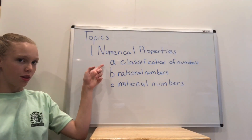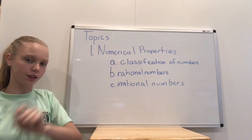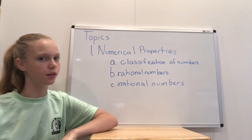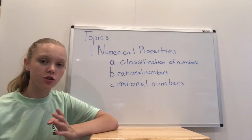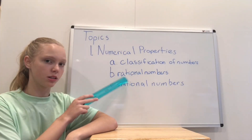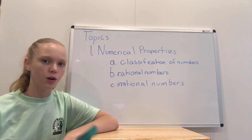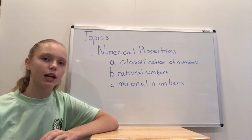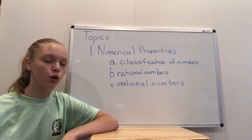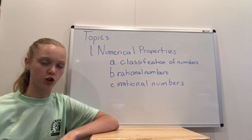The first thing within this we will be discussing is the classification of numbers. Some such classifications are rational numbers and irrational numbers. However, we're going to be discussing those in a lot more detail after we discuss classification.